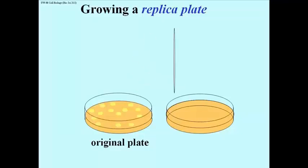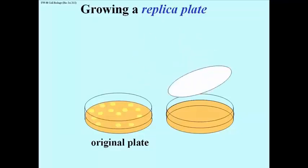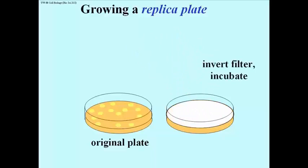Then you take that filter, turn it right side up — colony side up — and put it on a fresh plate. Over time, growth in that dish will produce a mirror image of the colonies that were on the original plate. That's the replica plate.